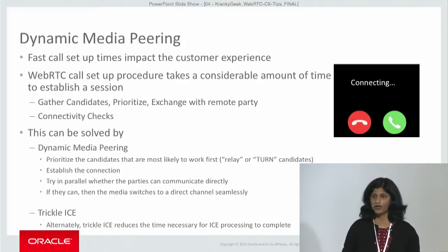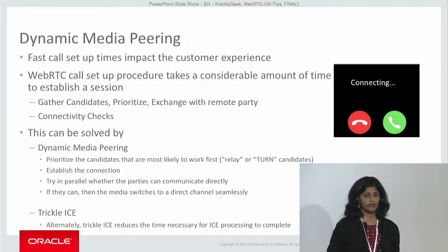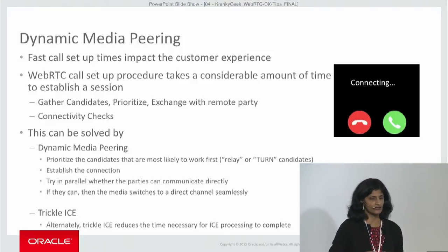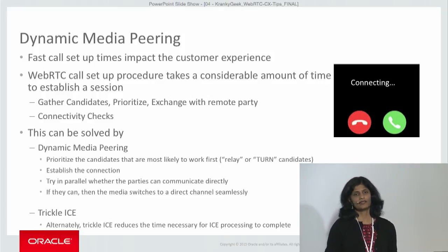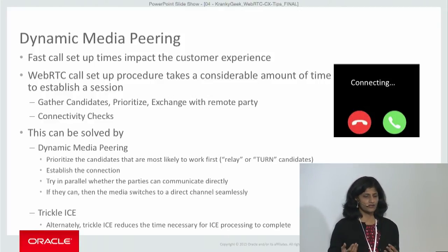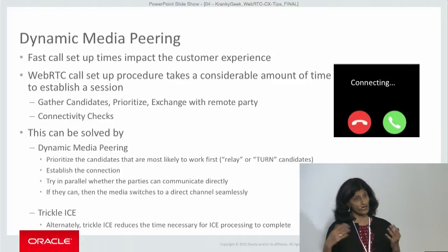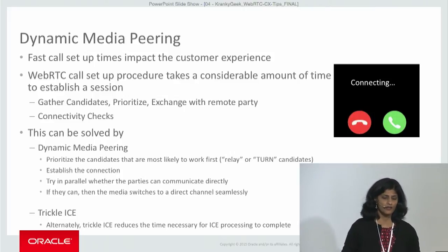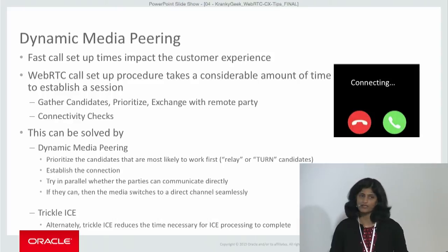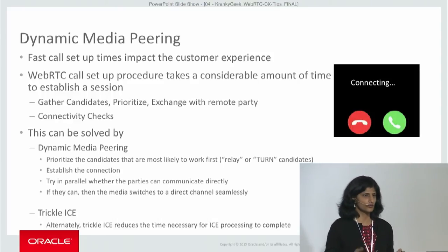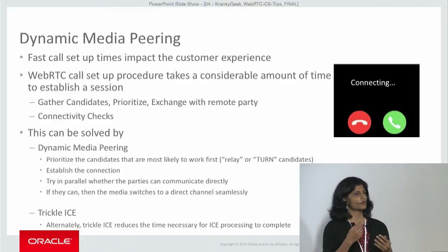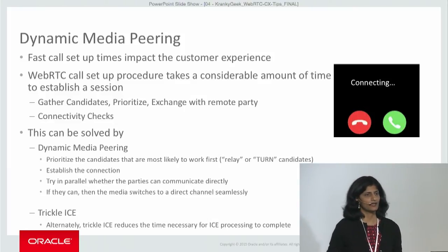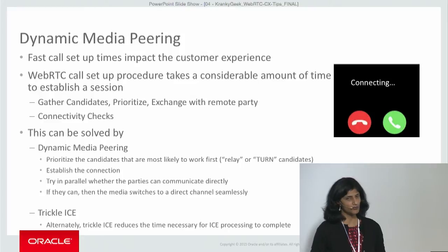Most people are now talking about dynamic media peering, where you prioritize candidates most likely to work first, establish the connection with a relay candidate, and simultaneously try in parallel with other candidates that can communicate directly — switching the media if they succeed. Alternatively, there is Trickle ICE, an extension to the ICE protocol that reduces setup time by incrementally gathering candidates, which also optimizes call setup times.